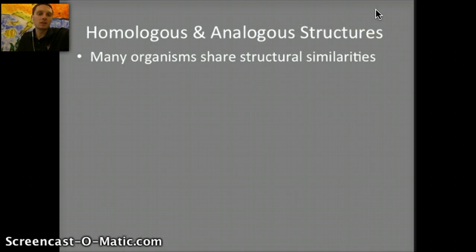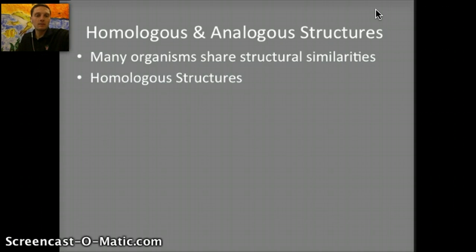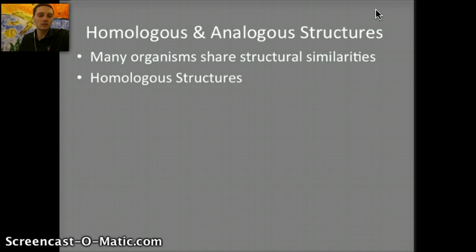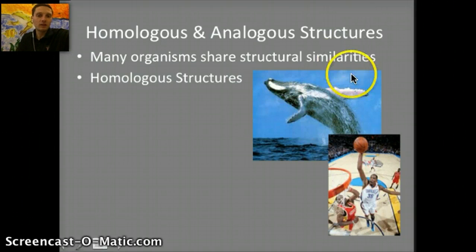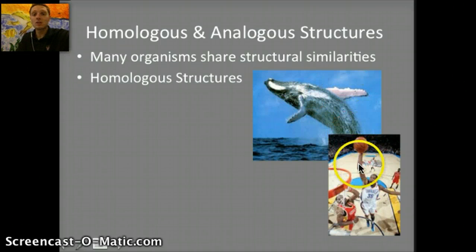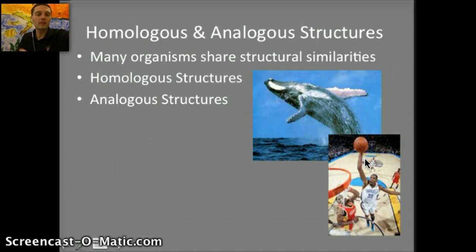We've previously talked about homologous and analogous structures. Homologous structures are similar structures in position or development, caused by a similar ancestor, but not necessarily similar in function. Some great examples: whales have pentadactyl bones in their flippers — the arm bones that comprise the bones in their flippers. Humans have those same pentadactyl bones, five bones that make up their arm structure. We obviously use those for very different purposes — Kevin Durant dunking versus whales swimming in the ocean — very different functions, but the same similar structure.